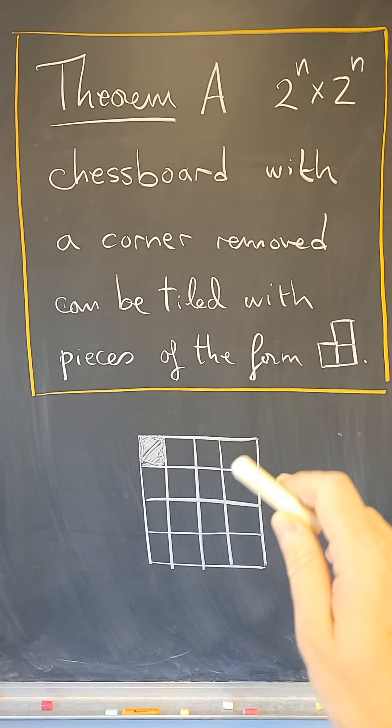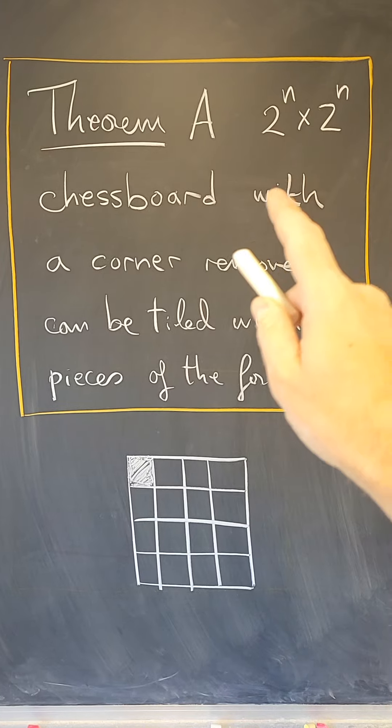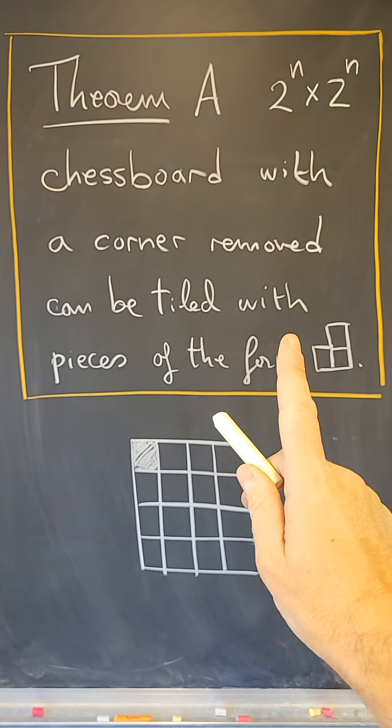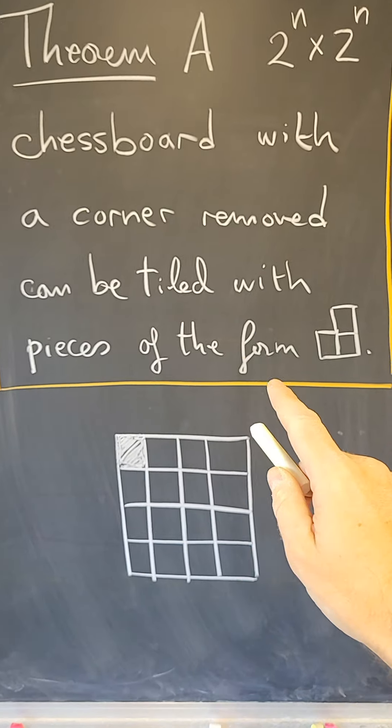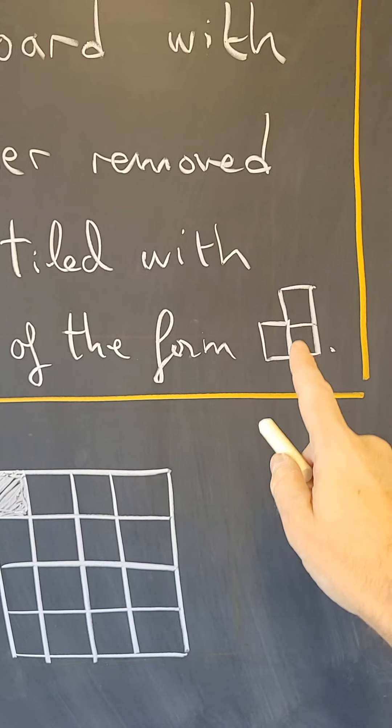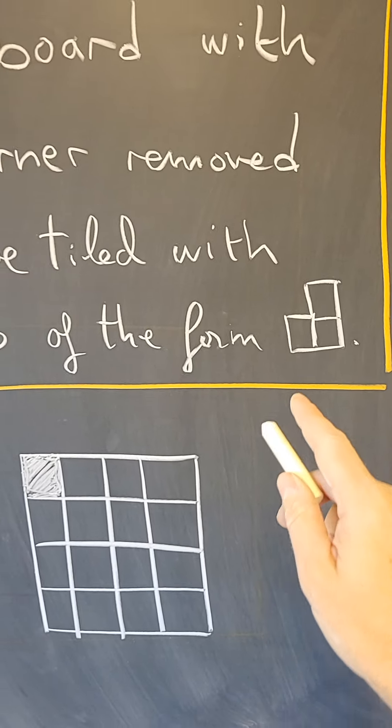And in this case, what we're going to prove is that a 2 to the n by 2 to the n chessboard with one corner removed can be tiled with pieces of the form, these sort of L pieces with three squares.